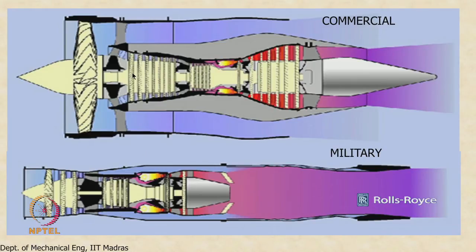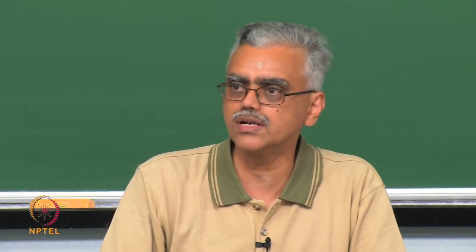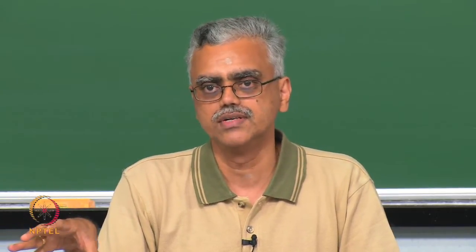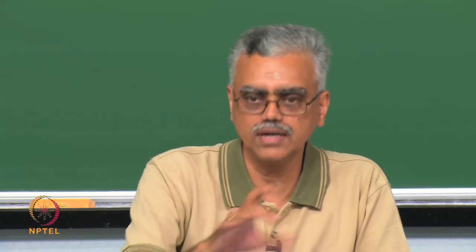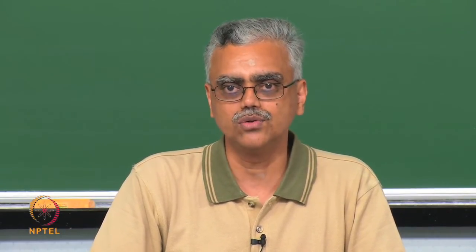Low bypass ratio engines are typically used for military applications and high bypass ratio engines for commercial aviation. You can see the increase in fan diameter with increasing bypass ratio and the consequent increase in frontal drag. Ultra-high bypass ratio engines will have even larger frontal areas, which means you may not be able to mount them on existing aircraft wings — the wings may be too close to the ground. So the technological challenge becomes where and how to mount such large, heavy engines.